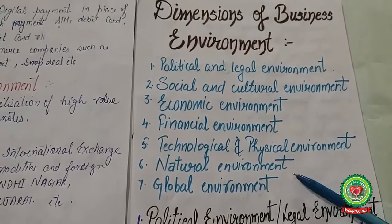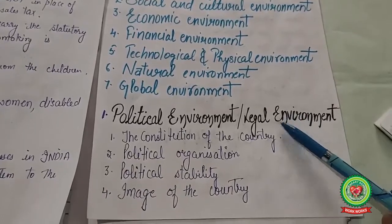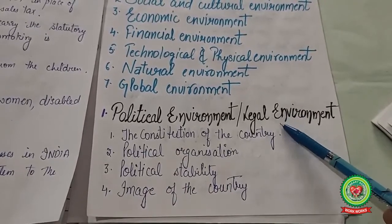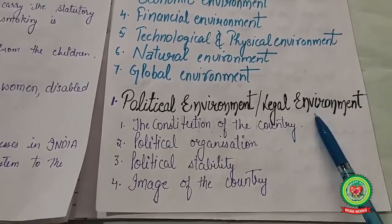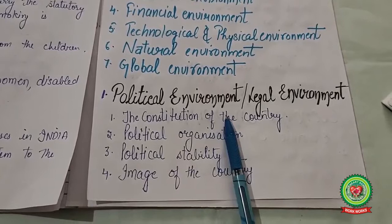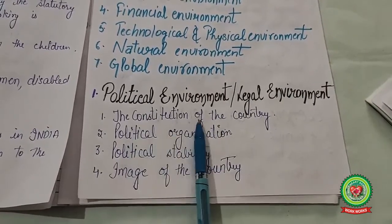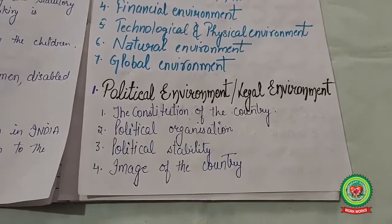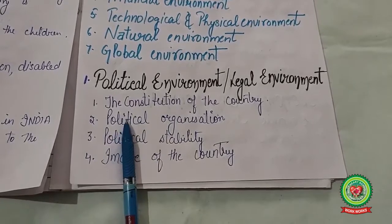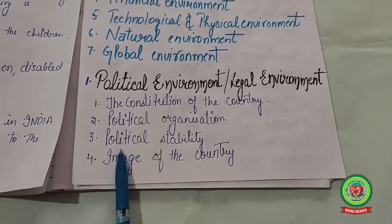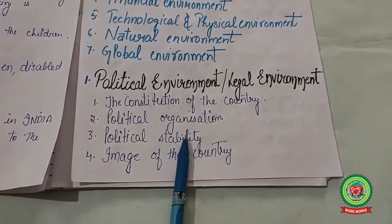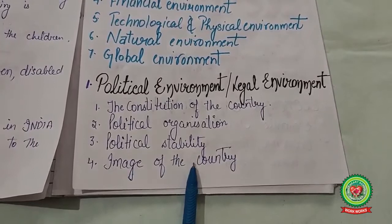The political environment comprises elements relating to government affairs and serves as a regulatory framework for business. It includes the constitution of the country, political organization — including ideology, political parties, business donations to political parties, and political consciousness — and political stability, including rules, regulations, and foreign institutions.